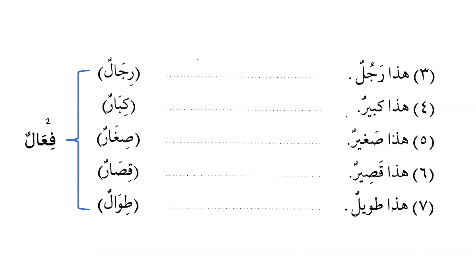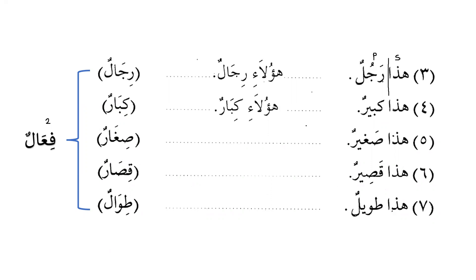Pattern 2 is فِعَال. هذا رجل — this is a man — becomes هؤلاء رجال, these are men. هذا كبير — this is big/senior — becomes هؤلاء كبار, these are senior. هذا صغير — this is young — becomes هؤلاء صغار, these are young, though it depends on context.